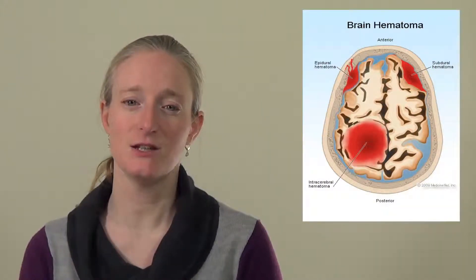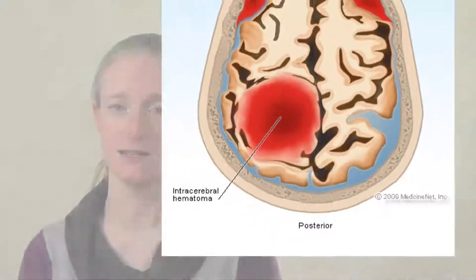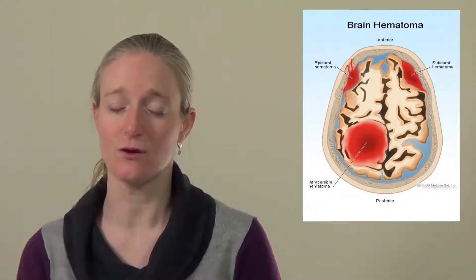Finally, the bleeding can also be found in the deep structures of the brain. It is generally significant impacts that cause this kind of injury, such as a car accident at high speed. Patients are often in a coma immediately after the accident and may remain so for a long time.